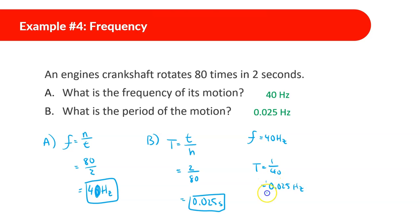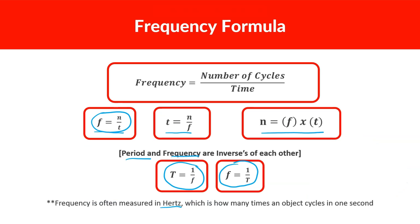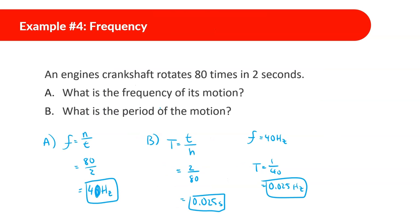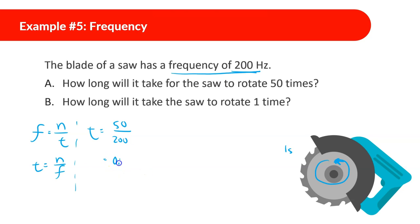The blade of a saw has a frequency of 200 hertz, meaning it rotates 200 times in one second. How long will it take for the saw to rotate 50 times? Using: time equals number of cycles divided by frequency, we get 50 divided by 200 equals 0.25 seconds.